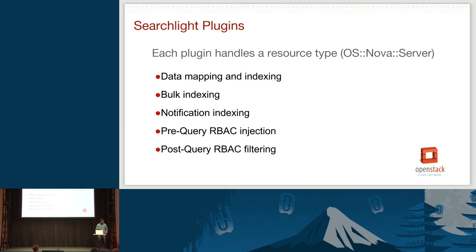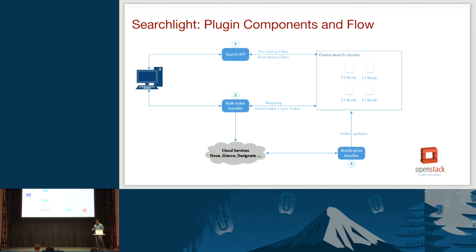The heart of all this is the plugin system. Anything specific to each service is all in the plugin. Searchlight provides a platform with a simple interface you can interact with. It's based on the Stevedore plugin system — if you've already worked on OpenStack it's straightforward, and even if not, it's very easy to write a new plugin. Right now in Liberty we have plugins for Glance, Nova, and Designate. In the upcoming release there will be several more, but it takes only a few hundred lines of code to write a new one.